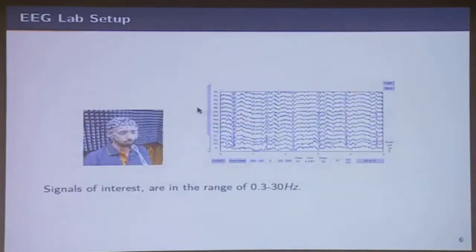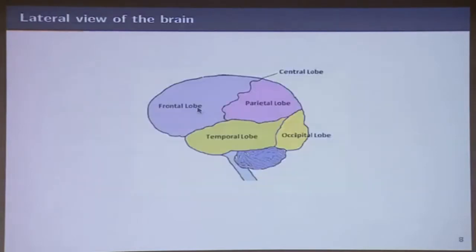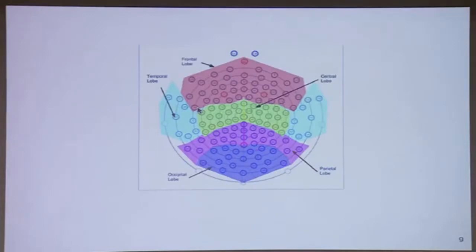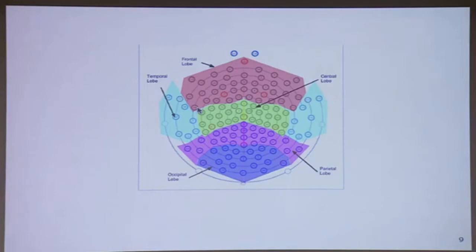We have a map of the EEG net vis-à-vis the various lobes that make up the brain. These are the sensors — the microphones — placed on your head, and these are the various lobes. Why is this important? If I'm looking at speech, I might look at the temporal and parietal lobes, whereas if I'm looking at vision, I might look at the occipital lobe sensors. I may not require other sensors.